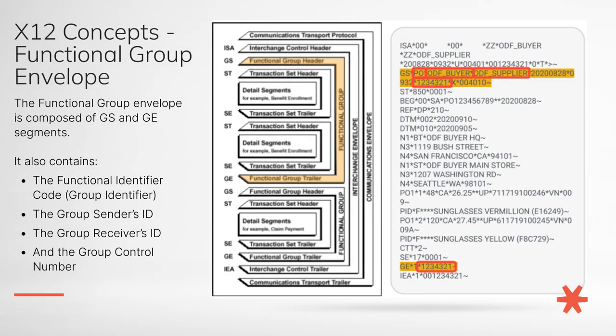A functional group is a collection of related EDI transactions, such as multiple purchase orders or invoices related to the same trading partner. The functional group envelope is composed of GS header and GE trailer segments. It also contains the functional identifier code or group identifier — in this example it's PO, which stands for purchase order. The group sender ID is ODF Buyer and the group receiver ID is ODF Supplier, same as at the interchange level.